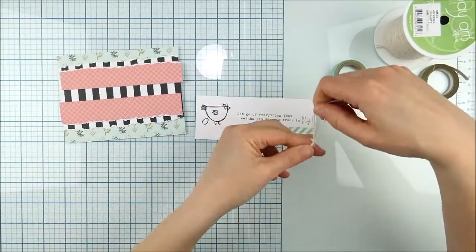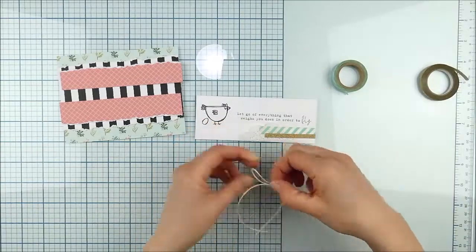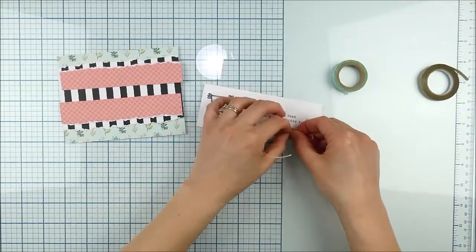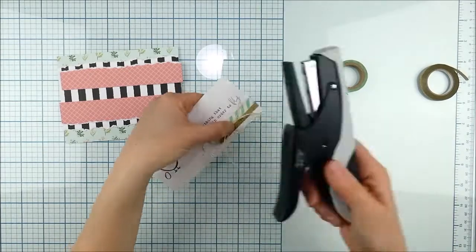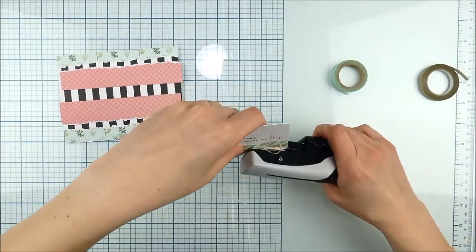Added those little torn edges on there, and then I decided I wanted a little bit of a bow. This is May Arts Jute String in Ivory, and to attach it down, again, I could tie a bow and glue it down, but I like my little tiny attacher.